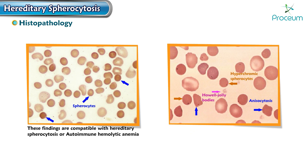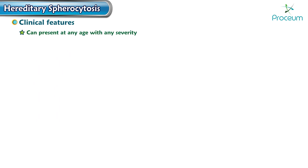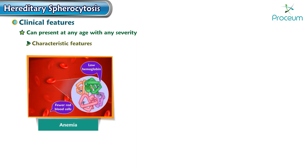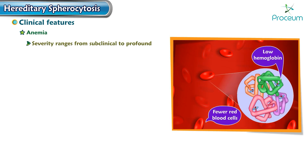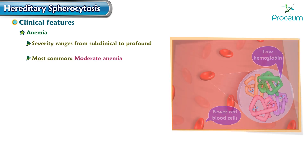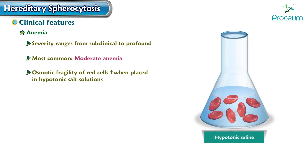Regarding clinical features, patients can present at any age with any severity. The characteristic features include anemia, splenomegaly, and jaundice. The severity of anemia ranges from subclinical to profound, but the most common is moderate anemia. Osmotic fragility of the red blood cells is increased when placed in hypotonic salt solutions.